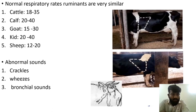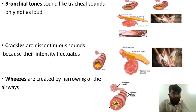Abnormal sounds include crackles, wheezes, and bronchial sounds. Bronchial tones sound like tracheal sounds, only not as loud. Crackles are discontinuous sounds because their intensity fluctuates. Wheezes are created by the narrowing of the airways.